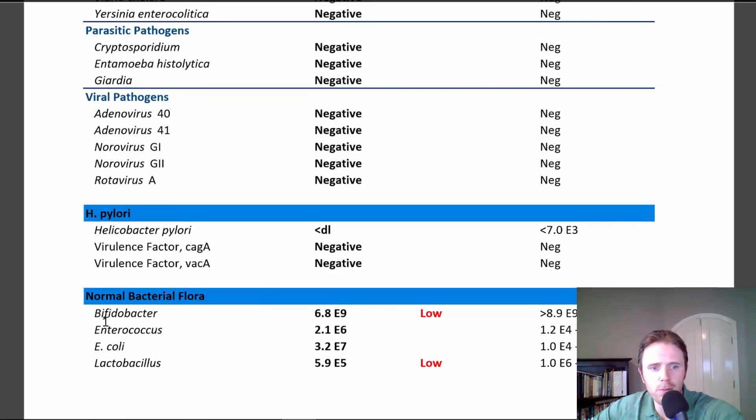It'll look at bacterial overgrowth. You can see this patient has low beneficial bacteria. Lactobacillus is a beneficial flora along with bifidobacter. So off the bat, you can already see the person has low beneficial bacteria.